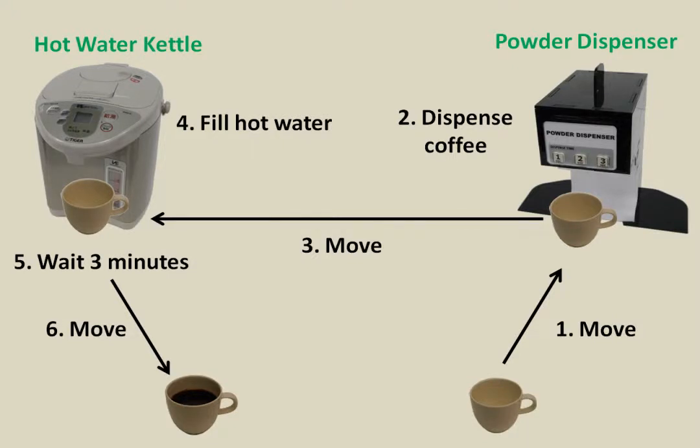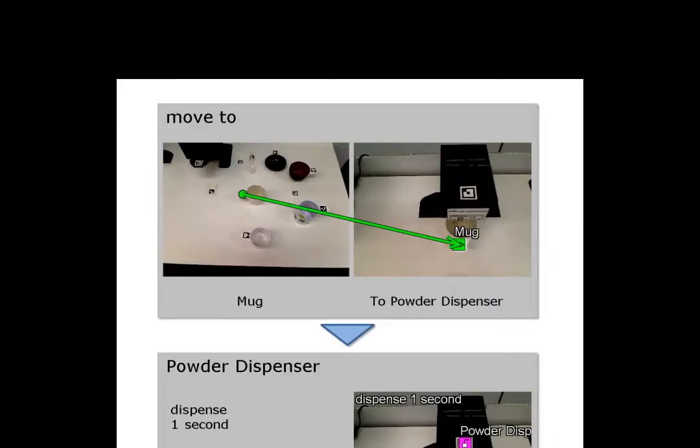In this example, we trained the robot to prepare a cup of coffee using a coffee powder dispenser and hot water kettle. These annotated photographs are produced from the handheld device.